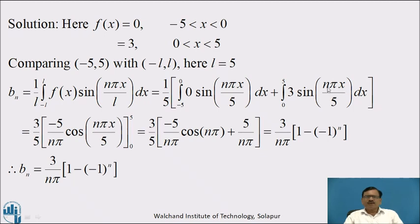Now integrating sin(nπx/L) dx, putting x = 5 we get -5/(nπ) · cos(nπ), and putting x = 0 we get cos(0) = 1, that is +5/(nπ). This gives bₙ = (3/nπ)(1 - (-1)ⁿ).